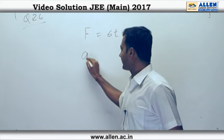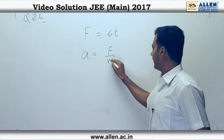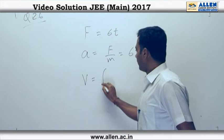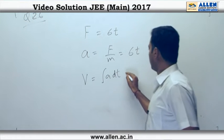So what you do is find acceleration f by m which happens to be 6t again, integrate this to get velocity